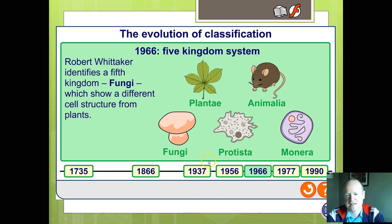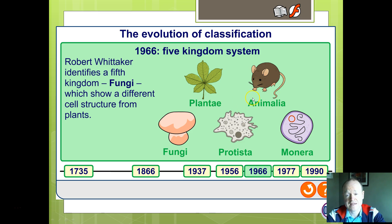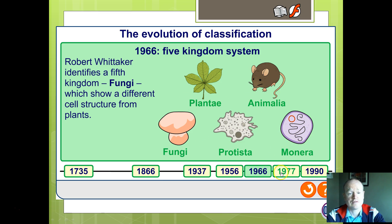In 1966, the five-kingdom system was established — and this is the one that some people still persist with today: Plantae, Animalia, Fungi, Protista or Protoctista, and Bacteria, distinguishing eukaryotes versus prokaryotes. That system is officially 50 years old this year.